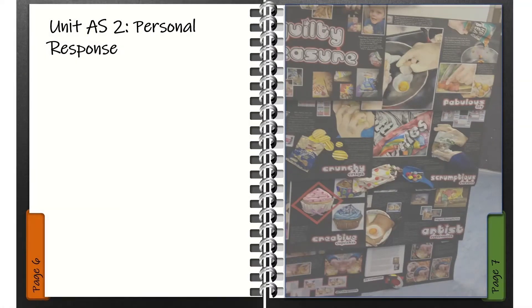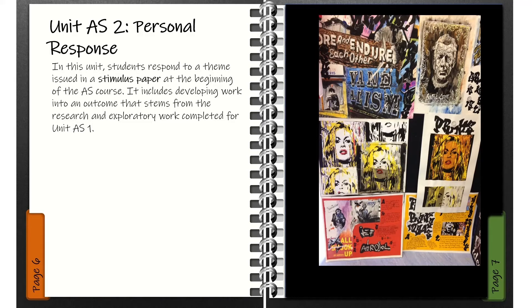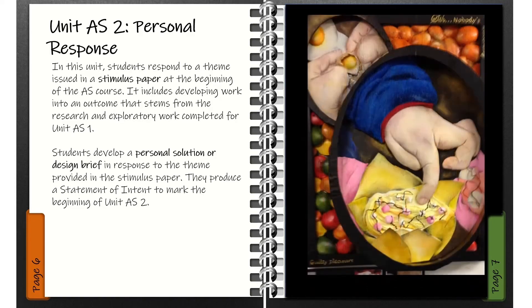In the second unit, students work on a Personal Response. Students respond to a theme issued in a stimulus paper at the beginning of the AS course. This includes developing work into an outcome that stems from the research and exploratory work completed for Unit 1. Students will develop a personal solution or design brief in response to the theme, and produce a statement of intent to mark the beginning of AS Unit 2.